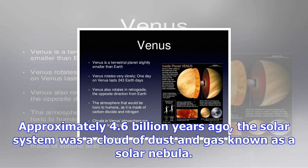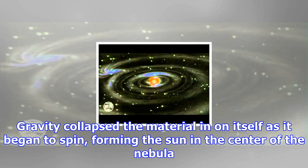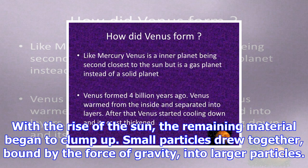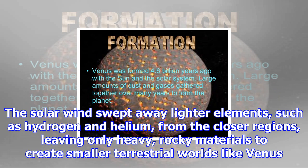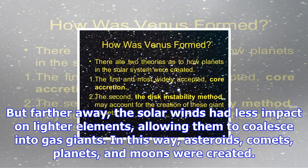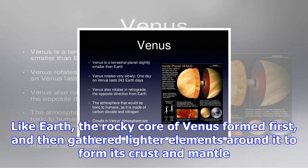Approximately 4.6 billion years ago, the solar system was a cloud of dust and gas known as a solar nebula. Gravity collapsed the material in on itself as it began to spin, forming the sun in the center of the nebula. With the rise of the sun, the remaining material began to clump up. Small particles drew together, bound by the force of gravity, into larger particles. The solar wind swept away lighter elements, such as hydrogen and helium, from the closer regions, leaving only heavy, rocky materials to create smaller terrestrial worlds like Venus. But farther away, the solar winds had less impact on lighter elements, allowing them to coalesce into gas giants.